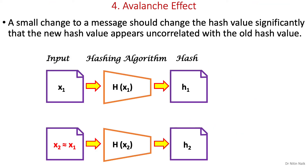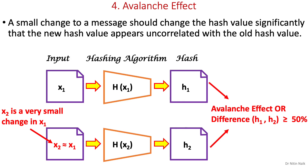Now let's look at another important property: the avalanche effect. It means a small change to a message should change the hash value so significantly that the new hash value appears uncorrelated with the old hash value. In plain language, a change in just one bit of the original message should result in a change to half the bits of its hash value, that is 50% or more. Any change made to an input, no matter how small, will result in a significant change in the output hash, making it unpredictable.